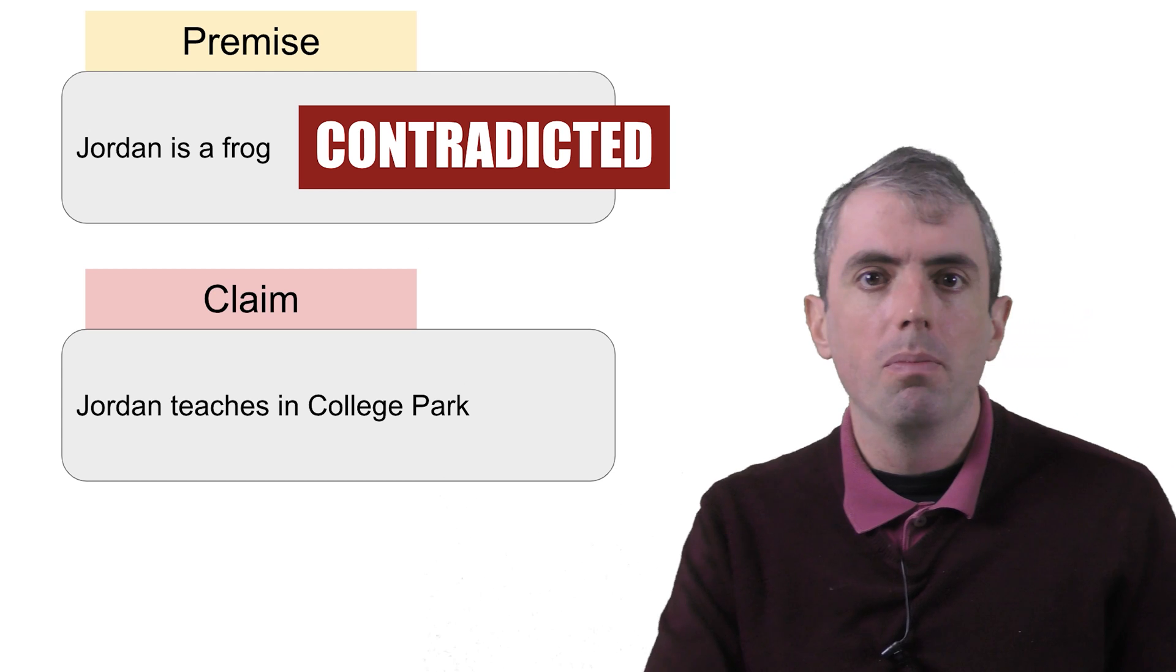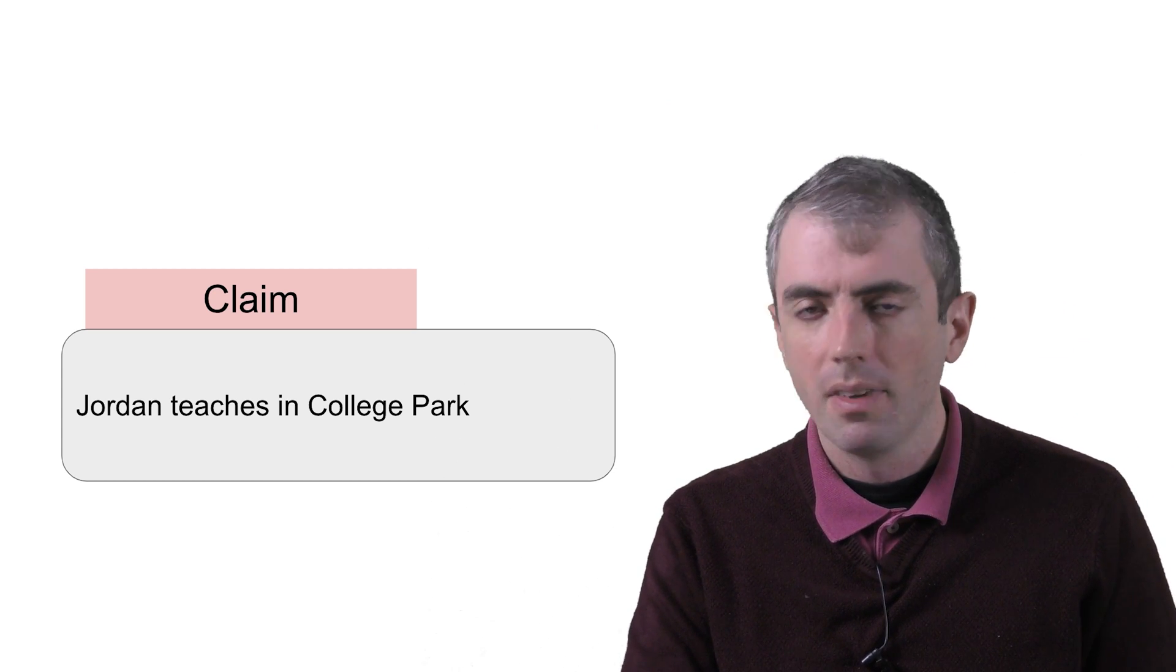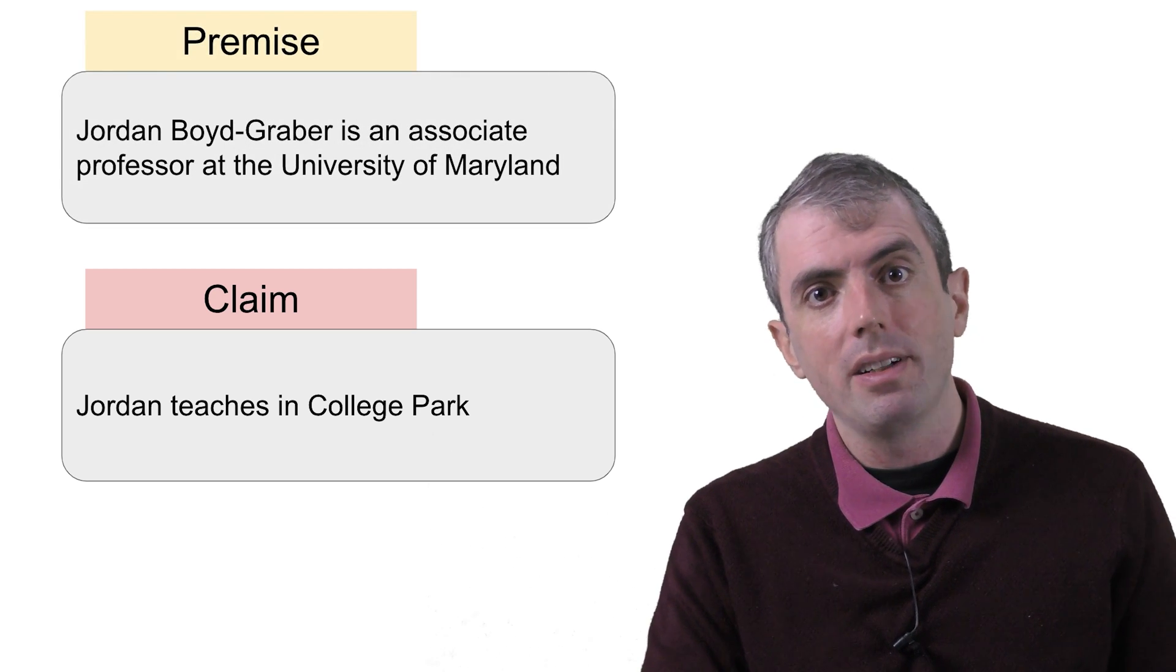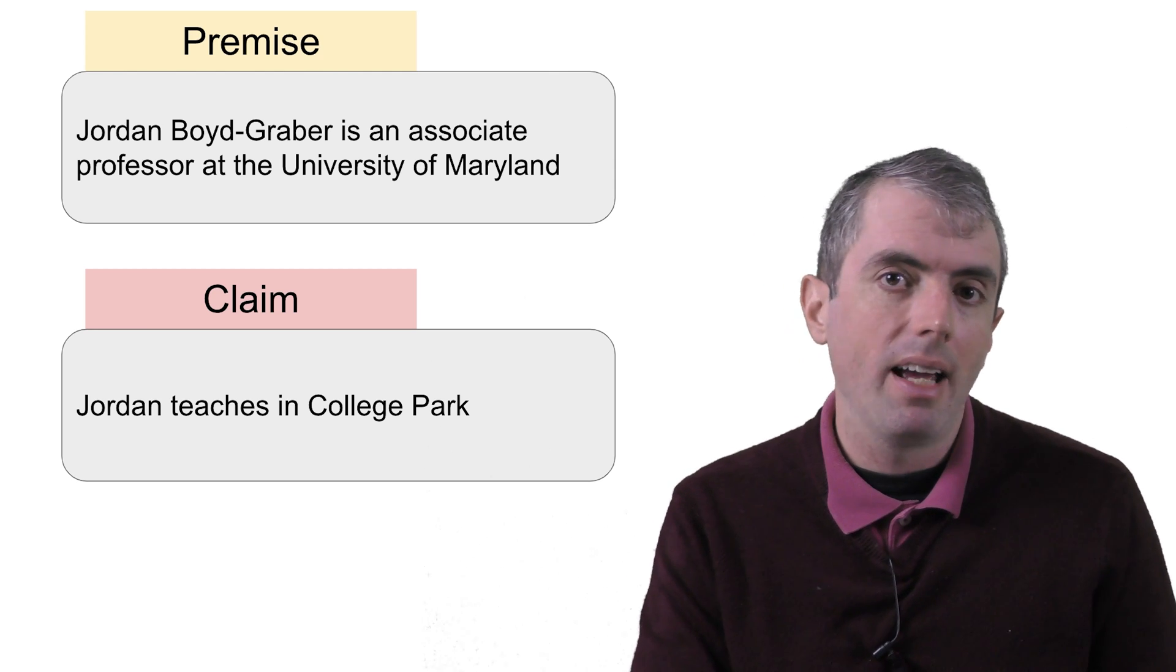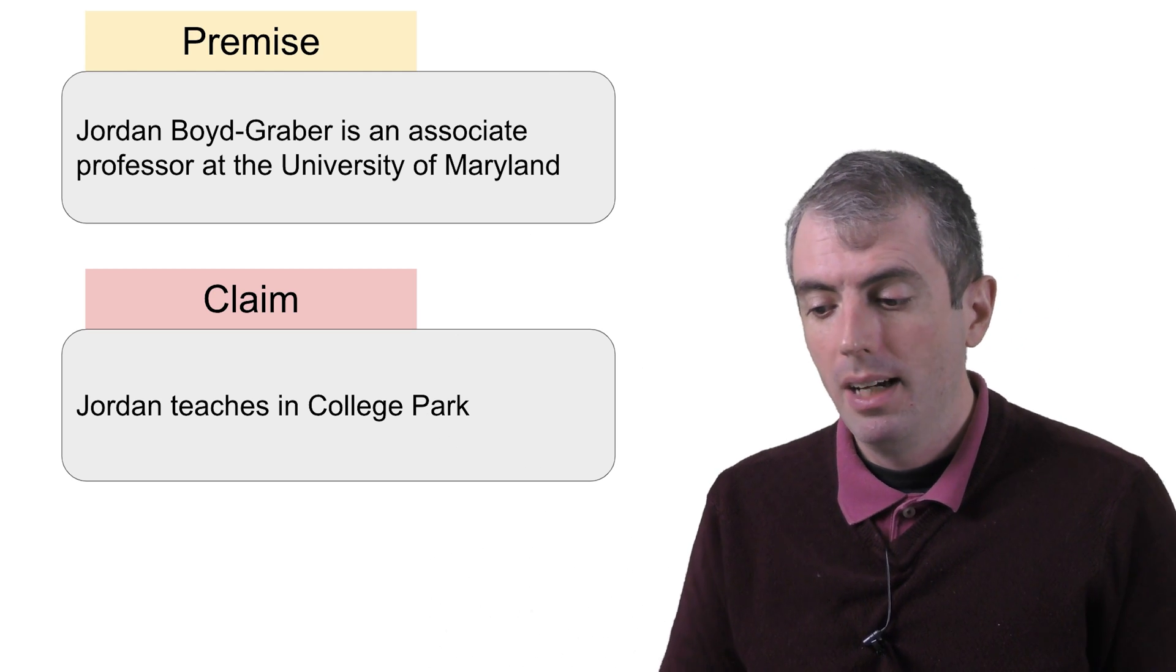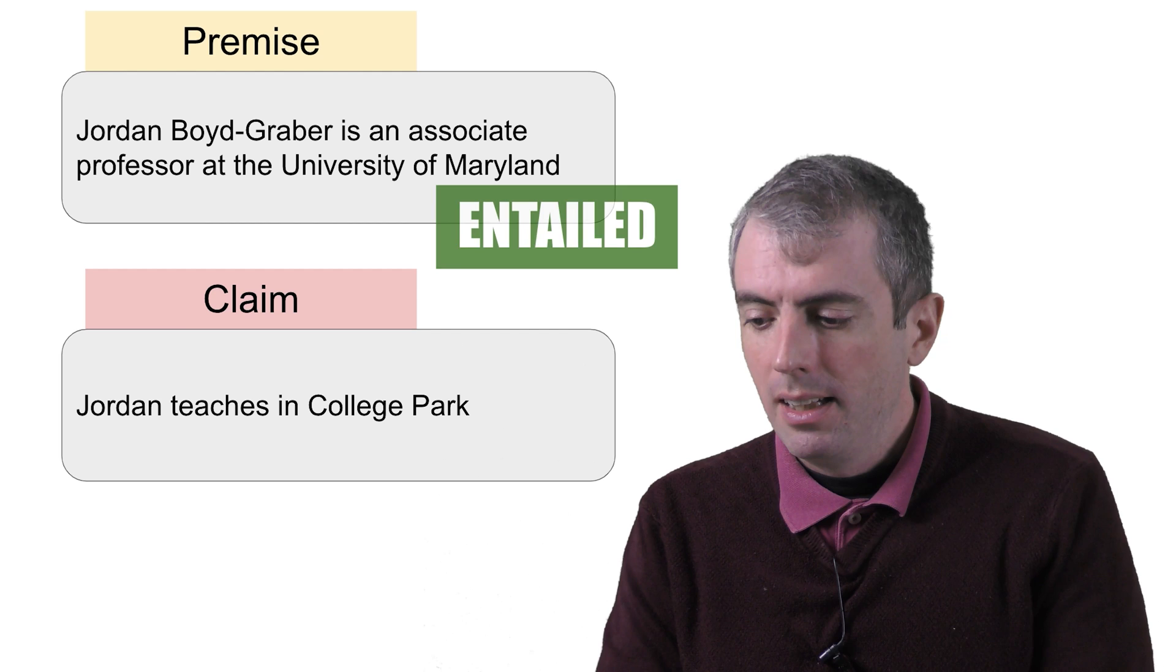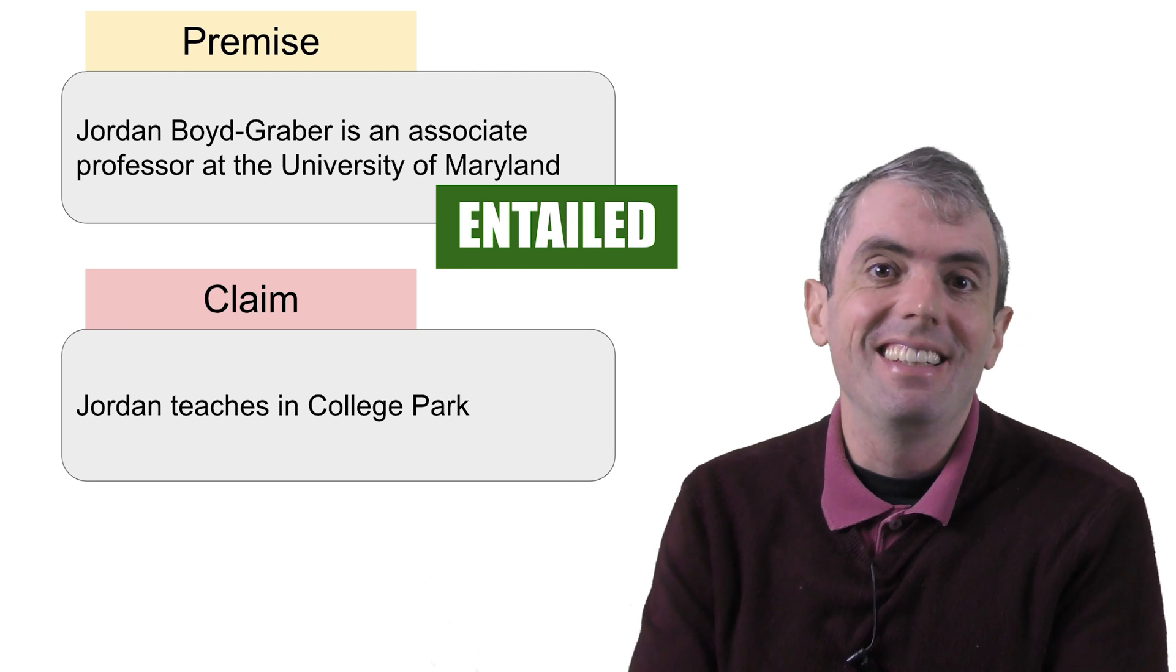Let's go back to the example I showed before that shows some of the difficulties of the task. To see that Jordan teaches in College Park is true, you need to know that professors are things that teach, that the University of Maryland is in College Park, and that Jordan Boyd Graber and Jordan are the same person. We could make this a little bit more difficult by instead of saying Jordan teaches in College Park, this could be JBG. But in the end, you need to figure out that this is indeed entailed.